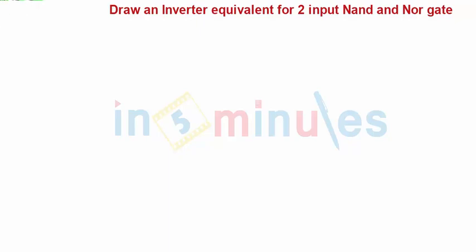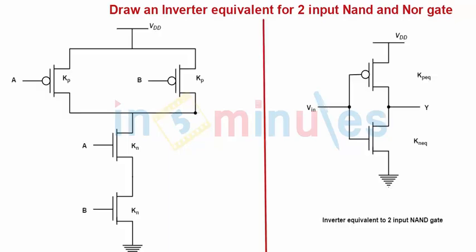Welcome to In Five Minutes. The agenda of this clip is to draw an inverter equivalent for a two-input CMOS NAND and a two-input CMOS NOR gate. Let's get started. On the left-hand side of the screen, we see that a two-input NAND gate diagram has been drawn. It's very simple and straightforward; we have already seen this in the previous clip.